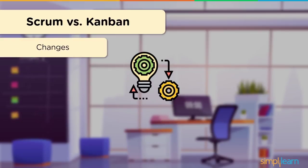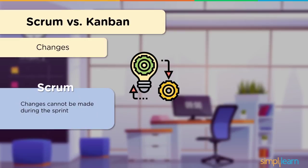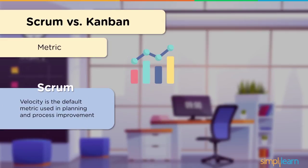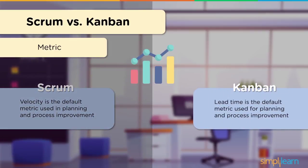Next, let's look at how changes are addressed. In Scrum, no change can be made while a sprint is in progress. Once it's complete, changes can be considered in the sprint plan and added to the sprint backlog. With Kanban, changes can be made at any time and incorporated into the workflow. Now let's consider the metric being measured. In Scrum, velocity — the measure of work that can be completed by a team in a sprint — is the key metric for planning and process improvement. In Kanban, lead time is the key metric, representing the period of time between a new task's appearance in your workflow and its final departure from the system.